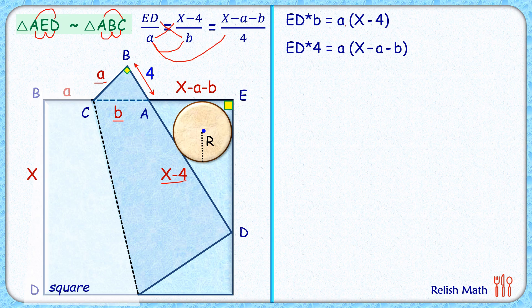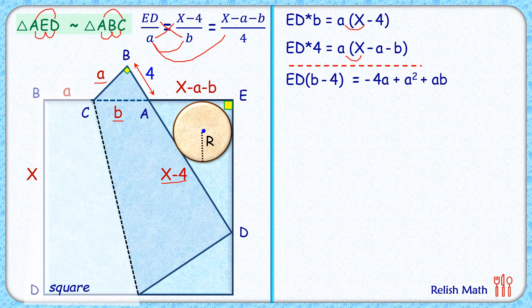Now these two equations, if we'll subtract, this a times x will get cancelled. So let's subtract these equations. LHS that will be ED times (b - 4), and RHS that will be -4a + a² + ab.